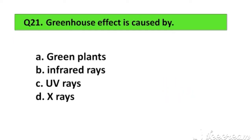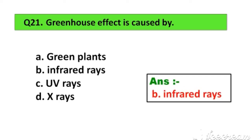Question number 21. Greenhouse effect is caused by: Option A. Green plants, B. Infrared rays, C. UV rays, D. X-rays. The right answer is Option B. Infrared rays.